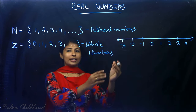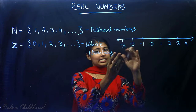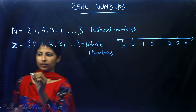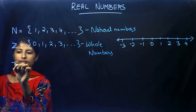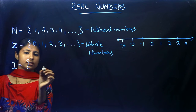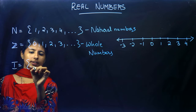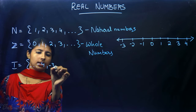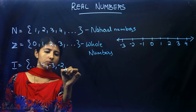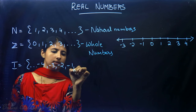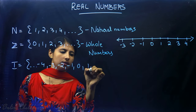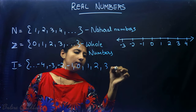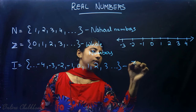Suppose if I'm taking all these negative numbers also — what are they called? Yes, integers. That includes ...-4, -3, -2, -1, 0, 1, 2, 3, and so on. They are called integers.